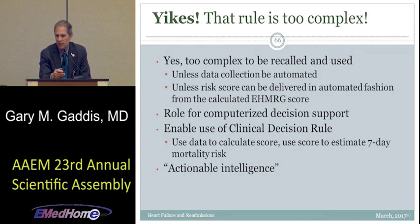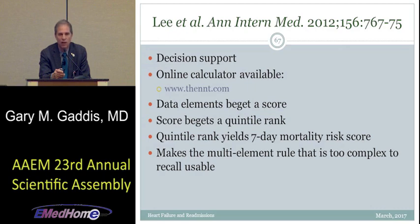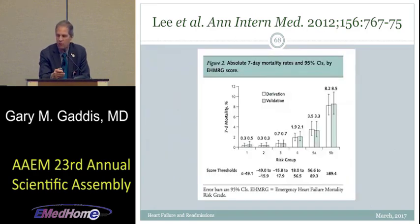There is indeed computerized decision support: NNT.com has put this rule — the EHMRG — on their website. You can just Google NNT.com and EHMRG, and you can manually poke in the data points to get a score. Raw data gives a numerical score, the score translates to a quintile of risk, and the quintile gives a risk of short-term mortality. The lowest two quintiles have a 0.3% risk of 7-day mortality, while the highest quintile has about an 8.5% risk.